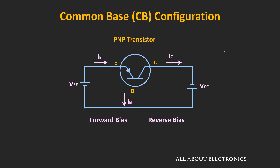In any case, the emitter current is the summation of the base current and the collector current. In the case of this PNP transistor, the emitter-base junction is forward biased and the base-collector junction is reverse biased.